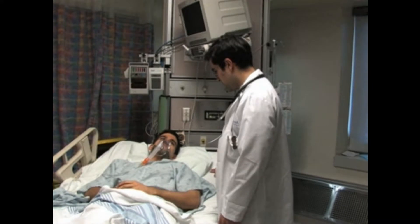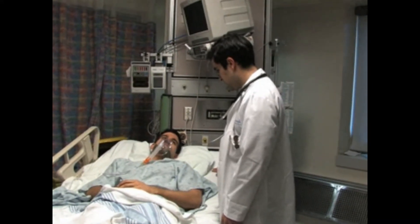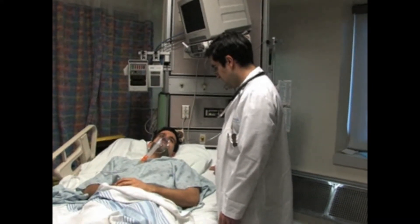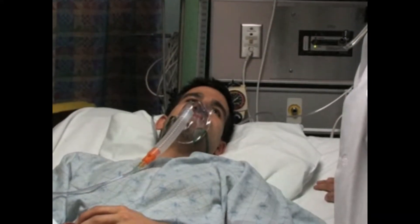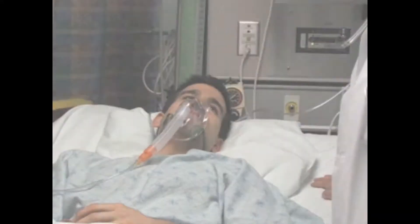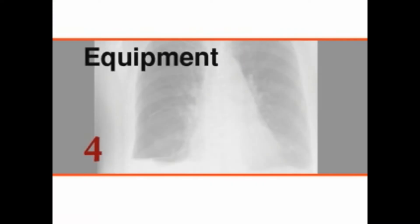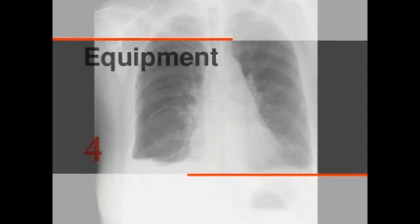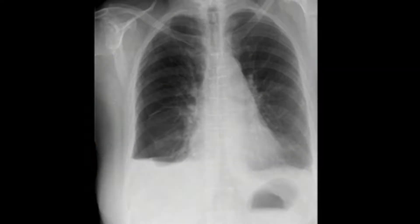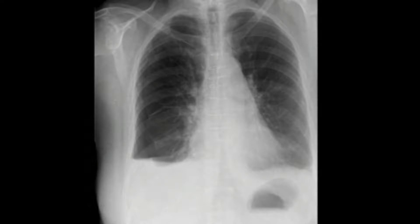The procedure should be explained and consent obtained whenever possible from the patient or next of kin. A chest x-ray should be performed when possible prior to chest tube insertion. Sterilized and fully prepared chest tube trays are often available in the hospital.